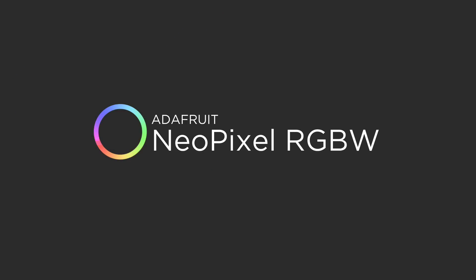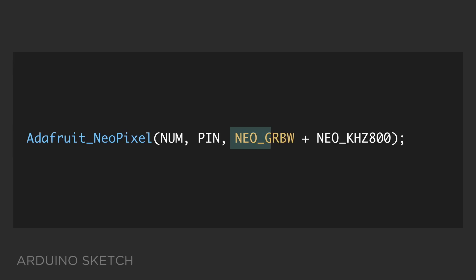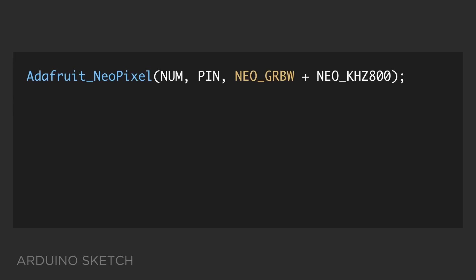In the Arduino sketch, it's easy to add support for RGBW NeoPixels. In the NeoPixel object, all we need to do is change the NeoPixel type to NeoGRBW. Then in the loop, we can add a fourth color value in the color argument and zero out the RGB values.